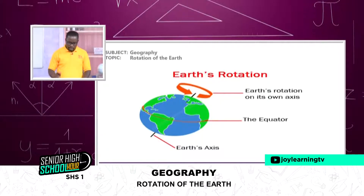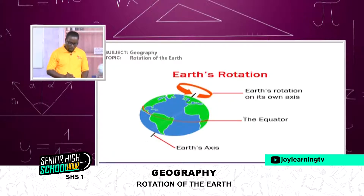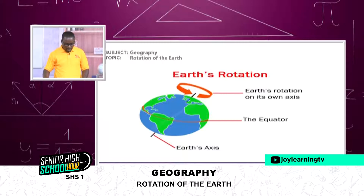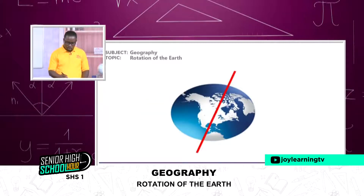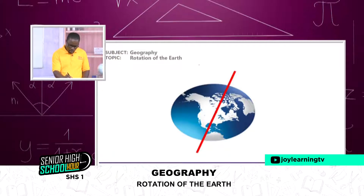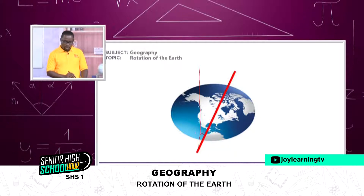On your screen is the Earth's rotation. You can see the direction—the arrow goes from west to east. This is what we call the axis, in the form of a pole, showing it passes through the center of the Earth. We have the equator here. When you check this particular axis, you'll see that the axis is not straight—it's not at a right angle. It is tilted, and this angle is 23.5 degrees.